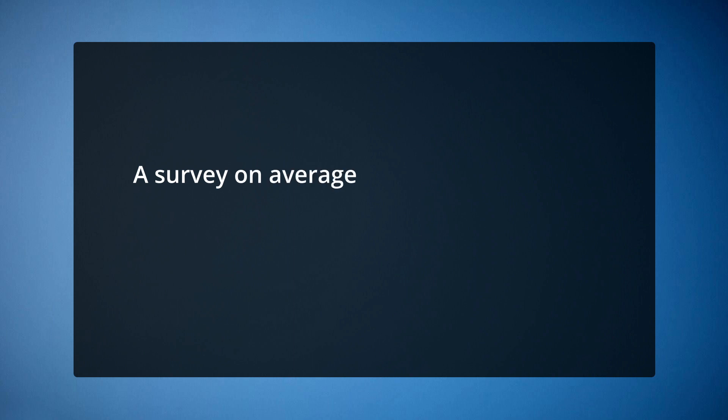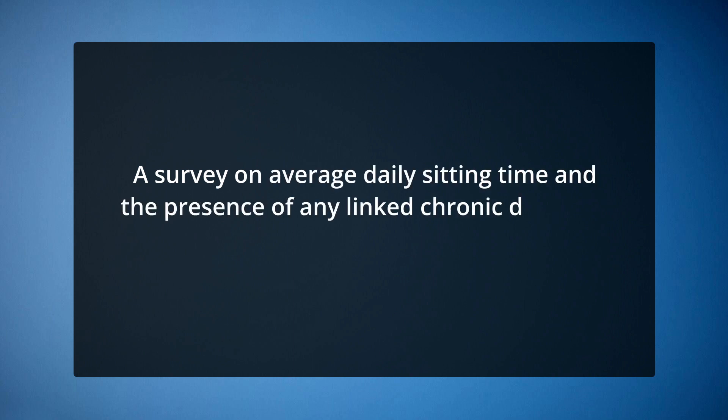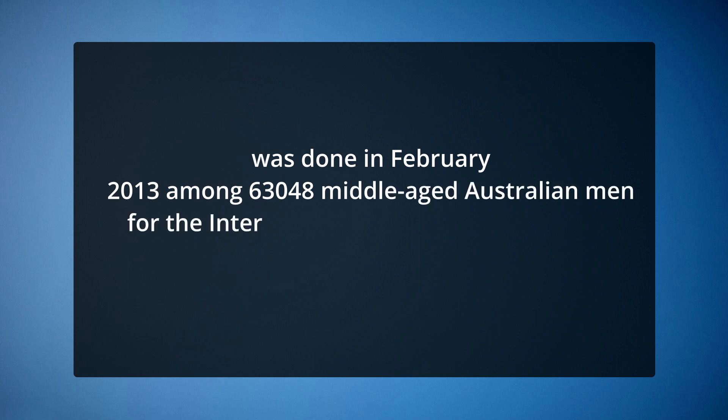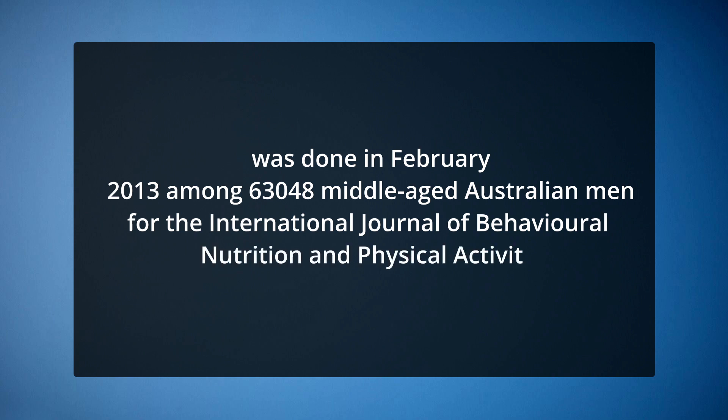A survey on average daily sitting time and presence of chronic diseases such as type 2 diabetes was conducted in February 2013 among 63,048 middle-aged Australian men for the International Journal of Behavioral Nutrition and Physical Activity. Responses ranged from 4 to 8 hours of sitting per day. The researchers found that increased sitting time exposed respondents to type 2 diabetes. Women are not excluded either, as 90% of type 2 diabetes in women is linked to obesity, poor diet and physical inactivity. Children can get type 2 diabetes but it is more frequent in people aged 30 and older.